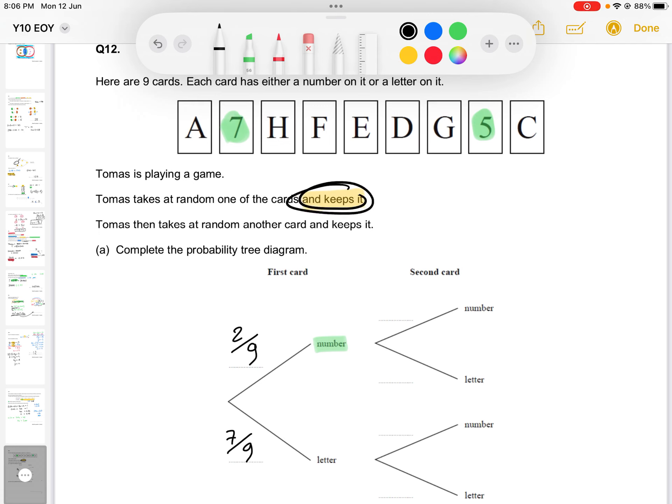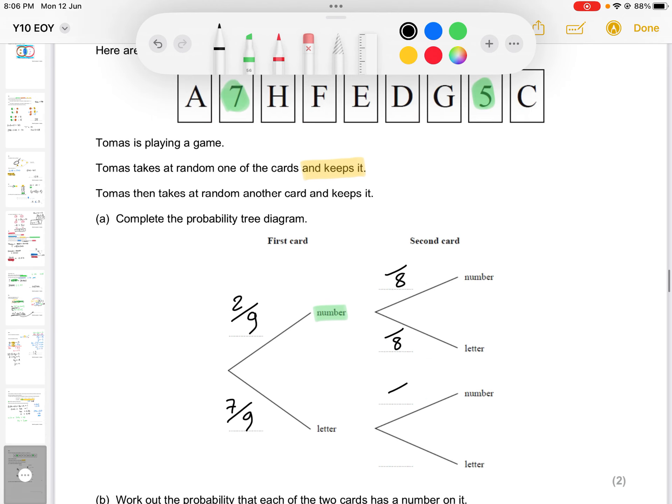Now because of the fact that we are keeping the card no matter which one of these choices we make, the probabilities in the second round are going to be out of eight. If we have gone down the first route here, we have chosen a number. That means that we now have one less number. One less than two being one. One, the seven numbers that started with, we still have. So it's seven. It's just out of eight for the second one because we have one less because one of the numbers was removed.